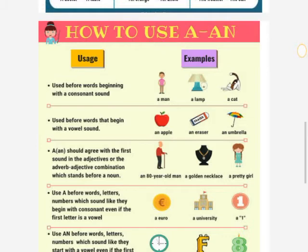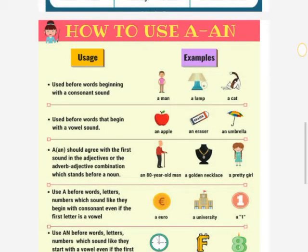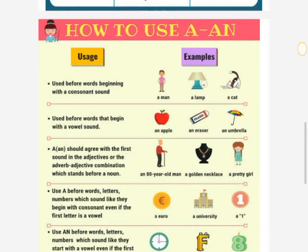For example: an eighty-year-old man. Eighty starts with a vowel sound, so we use an. Eighty-year-old is an adjective-adverb combination. A golden necklace, a pretty girl — pretty and golden are adjectives, and they start with consonant sounds, so we use a.